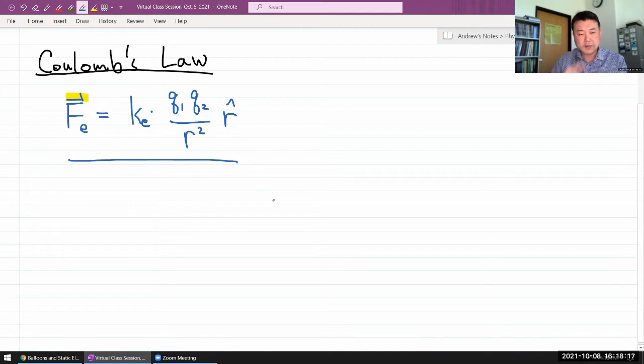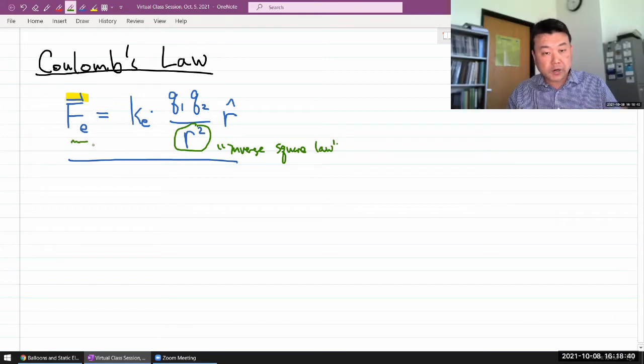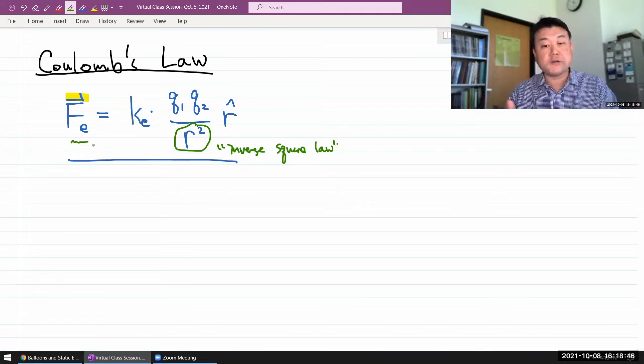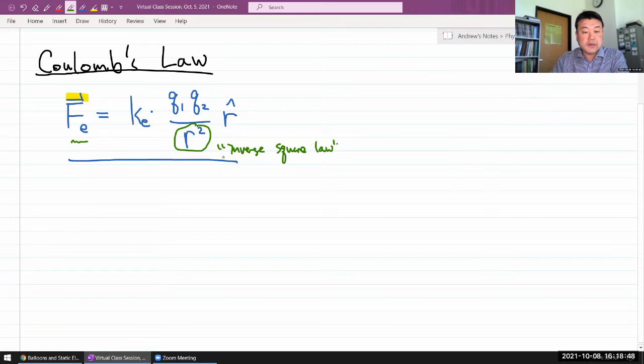So, this is Coulomb's law. In one single line, it contains quite a bit of information about electricity. The biggest thing would be that this is an inverse square law. It makes it so that the strength of the electric force is weaker for objects that are farther apart. And it's stronger for objects that are closer together. And so, that's the consequence of the inverse square law. When R is small, the force is great. When R is large, the force is small.